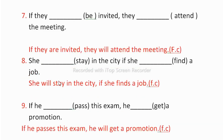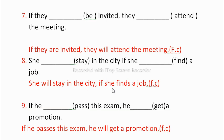The eighth one is: 'She stay in the city if she find a job.' You have to add first conditional: 'She will stay in the city if she finds a job.' Here the main clause comes first and the if clause is second. You can also write: 'If she finds a job, she will stay in the city.'